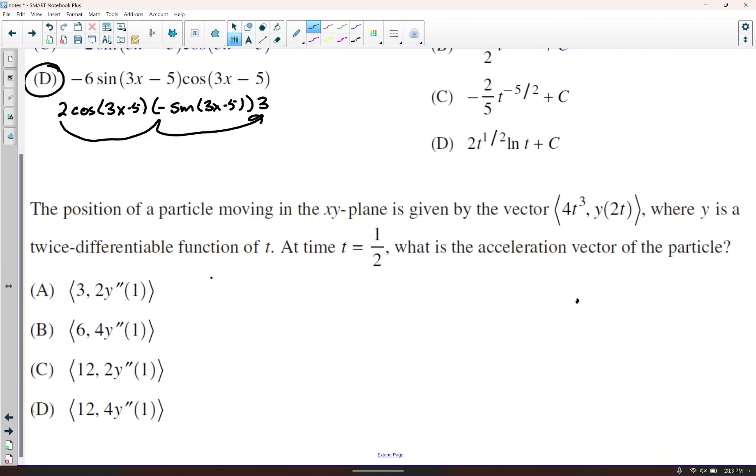The position of a particle moving in the xy plane is given by that vector, where y is a twice differentiable function of t. At time t equals 1 half, what is the acceleration vector of the particle? Well, the velocity vector is 12t squared and 2y prime of 2t. And then the acceleration vector is 24t and 4y double prime of 2t. Now we're going to evaluate this when t is equal to 1 half. And so we get 12 comma, the best we can do is the second derivative of, half of 2 is 1. And that ends up being letter D.